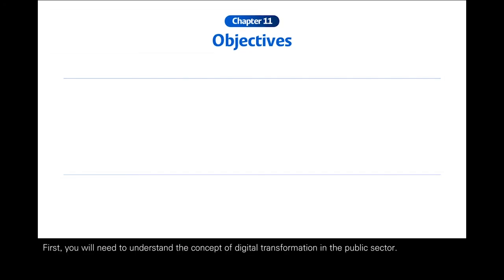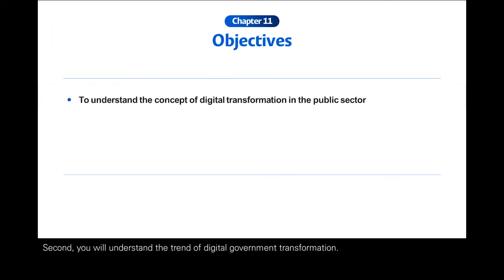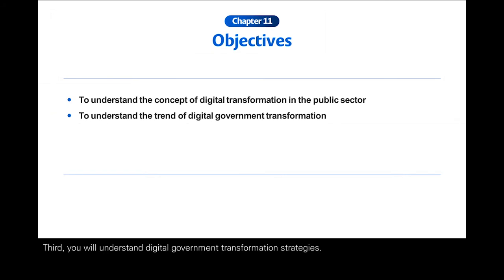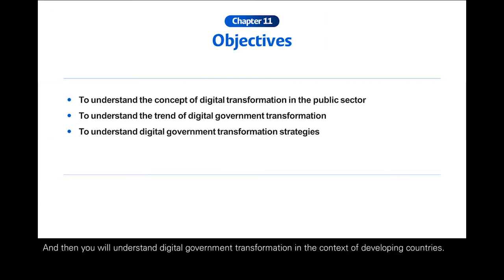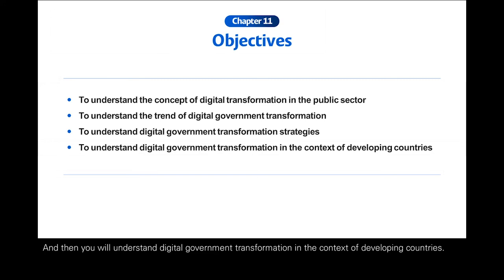This chapter has four objectives. First, you will need to understand the concept of digital transformation in the public sector. Second, you will understand the trend of digital government transformation. Third, you will understand the digital transformation strategies. And fourth, you will understand the digital government transformation in the context of developing countries.